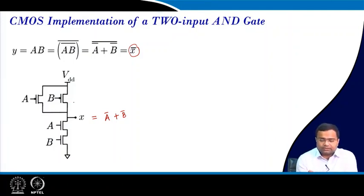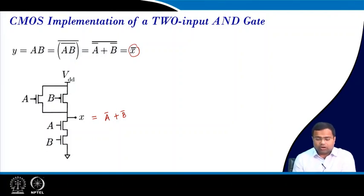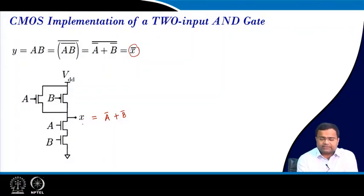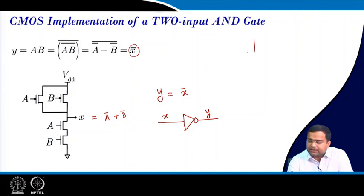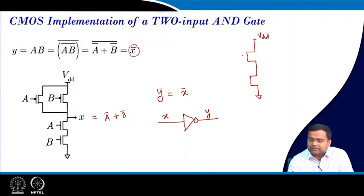And if both A and B are 1, then X equal to 0. So this is clear from the diagram. Once we have X, which is A-bar plus B-bar, then Y equals X-bar. This can be implemented by a simple inverter — that will be our Y. The inverter is implemented with VDD, a PMOS, and NMOS, with X as input and Y as output.